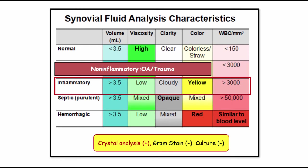So what is an inflammatory effusion? Basically anything between 3,000 and 50,000 with approximately 50% PMNs. No bugs will be present, and if crystalline arthropathy, crystals will be described.